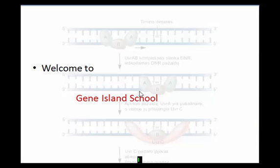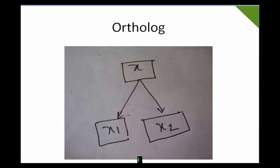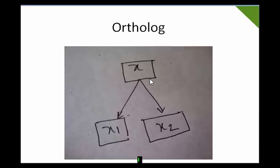Homology describes the relationship between genes and how they are inherited from a common ancestor. When a gene is inherited to a new gene or new species, the relationship between the DNA and the protein of the new ancestor is the main mechanism of orthology, homology, and paralogy.